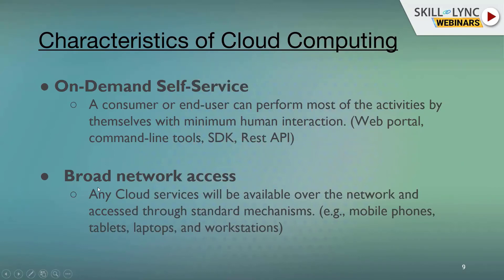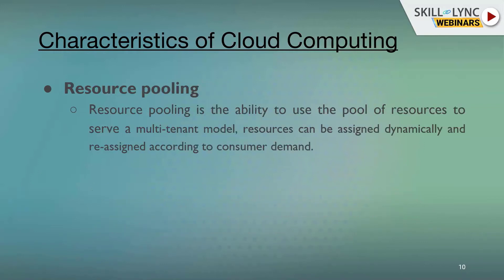Next is broad network access. Any cloud service will be available over the network and accessed through standard mechanisms such as mobile phones, tablets, laptops, and workstations. Finally, resource pooling is the ability to use a pool of resources to serve a multi-tenant model, where resources can be assigned dynamically and reallocated according to consumer demand.